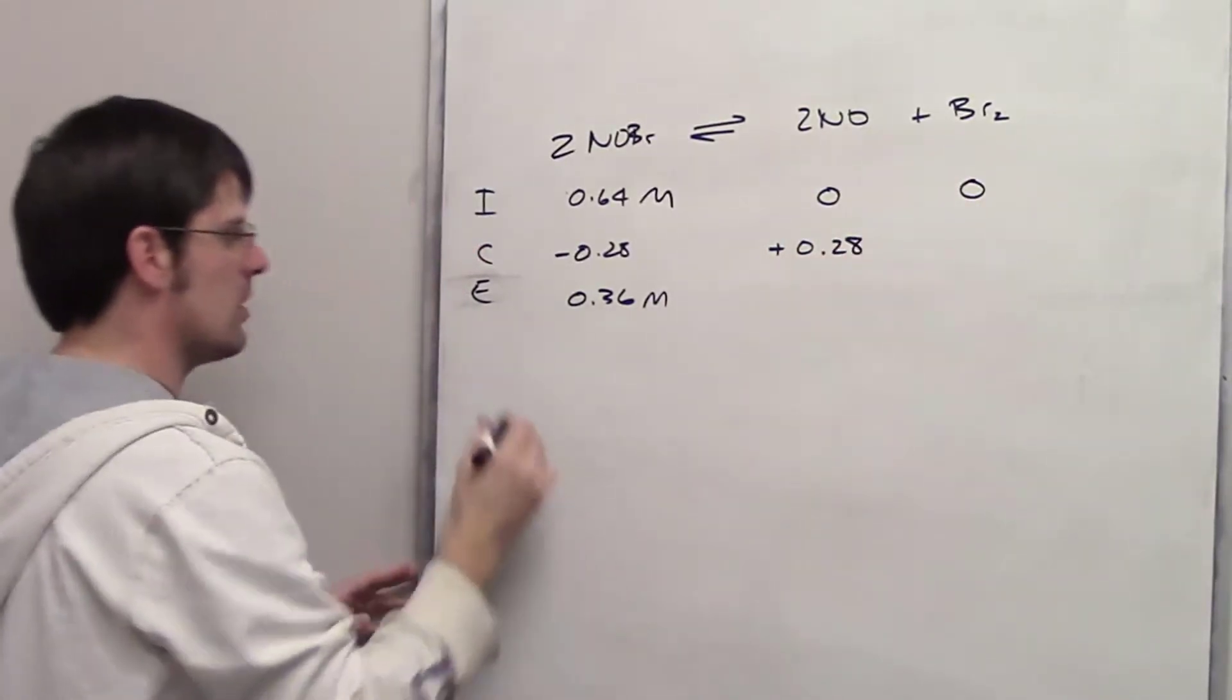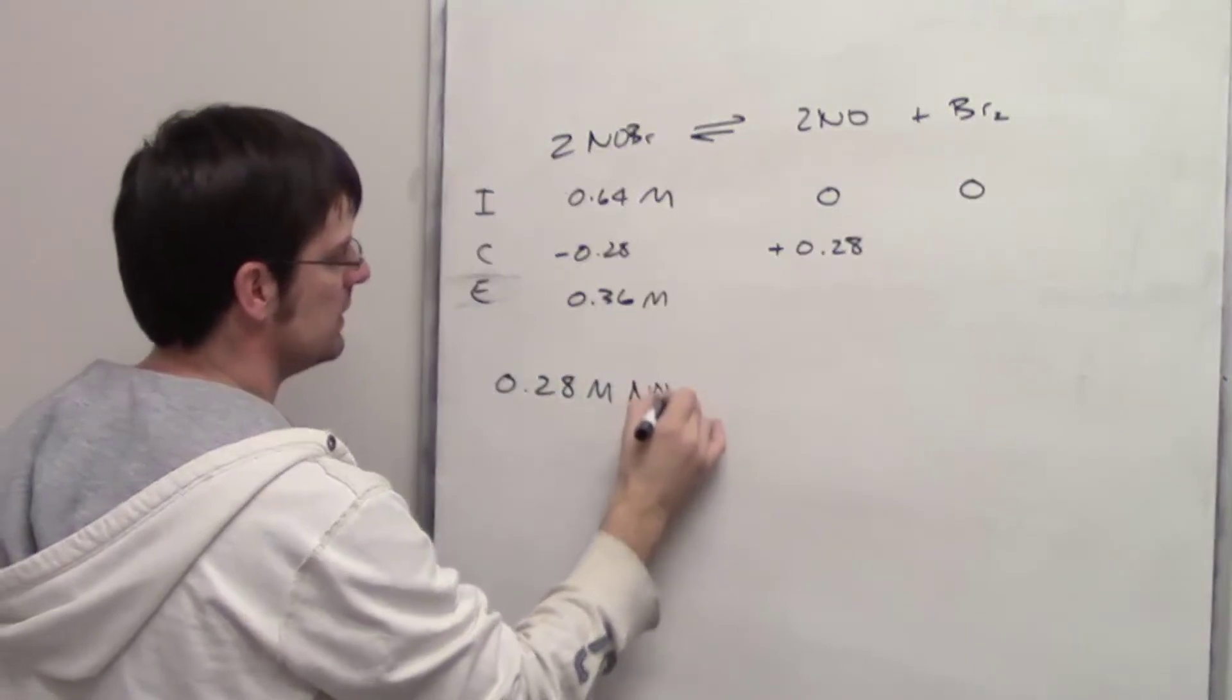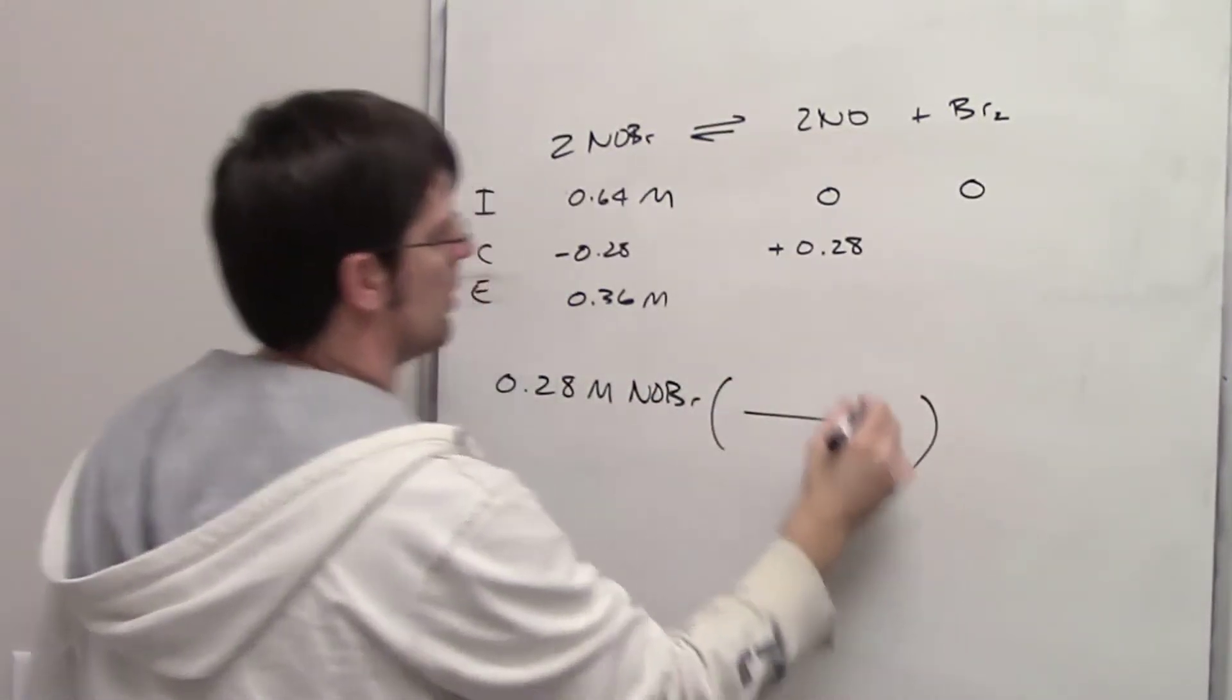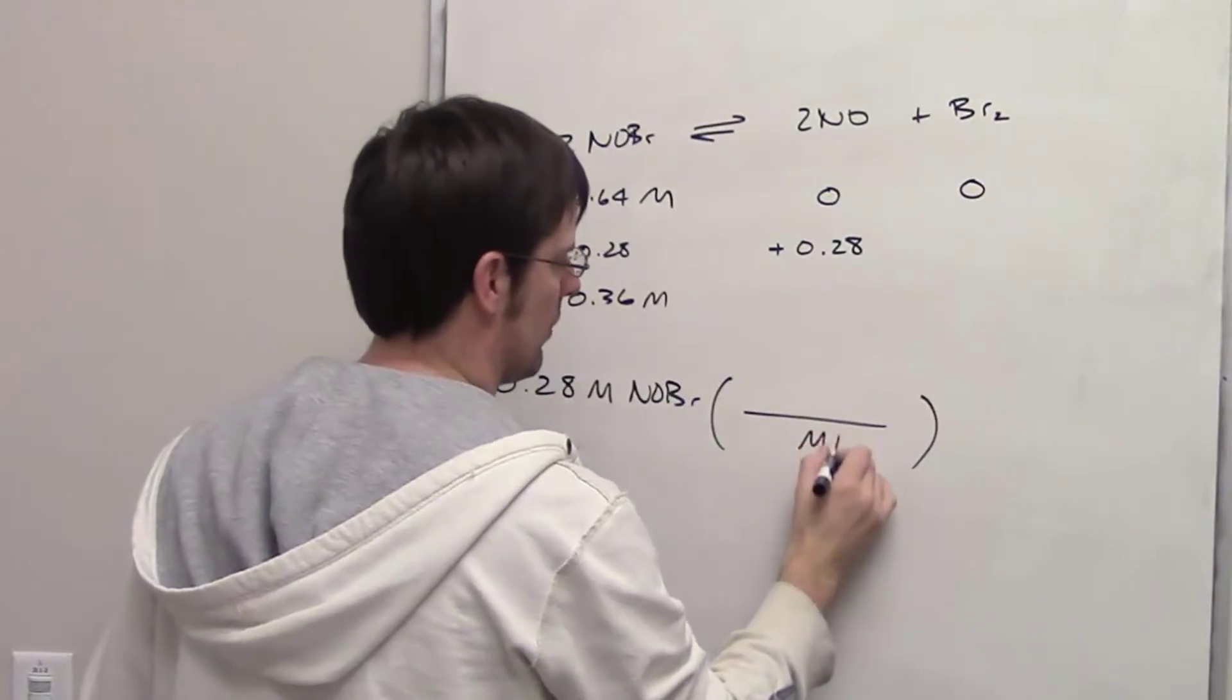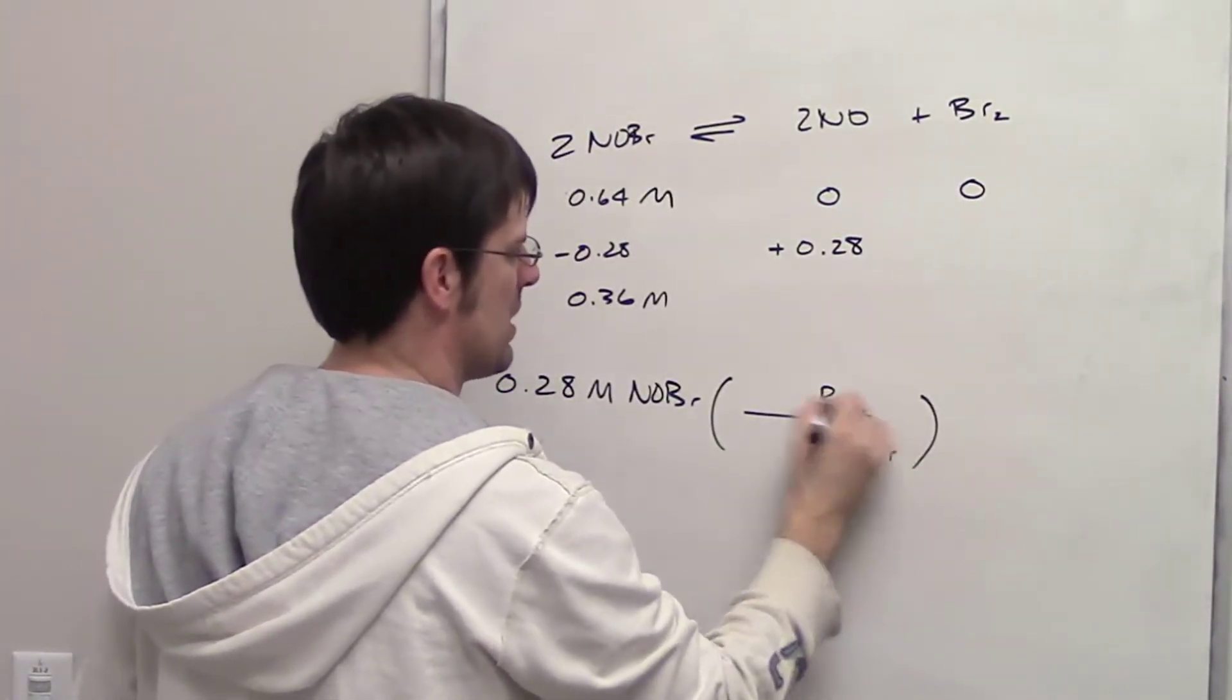What about Br2? I have 0.28 molar equivalents of NOBr. How many molar equivalents of Br2? I'll set up a ratio with molar equivalents of NOBr in the denominator and molar equivalents of Br2 in the numerator.